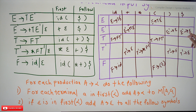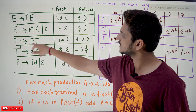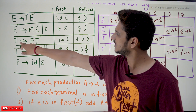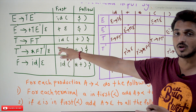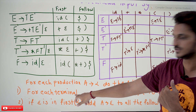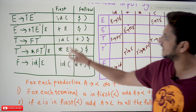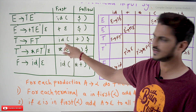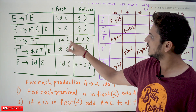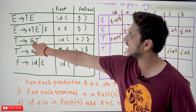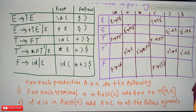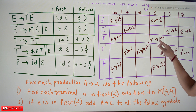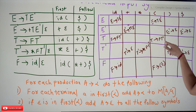Now for T → FT'. FIRST(T) = {id, (} and there is no ε, so only Rule 1 applies. Add T → FT' at M[T, id] and M[T, (].